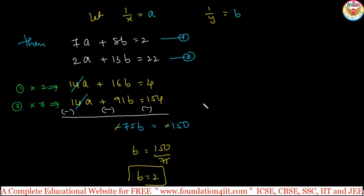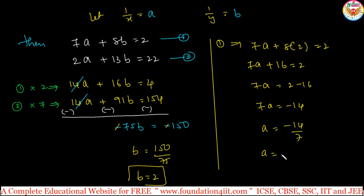Cancel the minus then b equals 150 divided by 75, so b equals 2. B value got. Now just b value substitute in any one of the equation either 1 or 2. Let us take b value in first equation: 7a plus 8b, b is 2, so 7a plus 16 equals 2. Then 7a equals 2 minus 16, so 7a is minus 14. a is minus 14 divided by 7, then a equals minus 2.